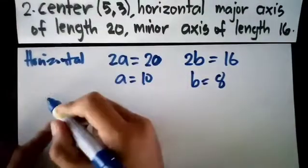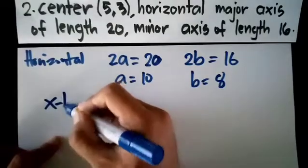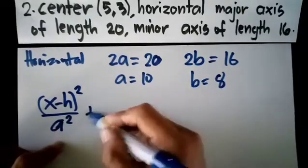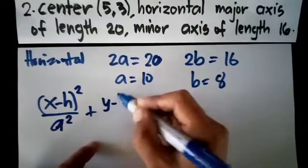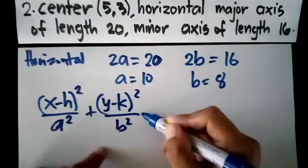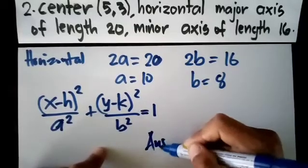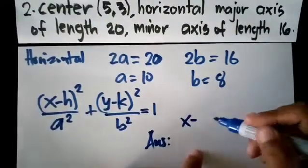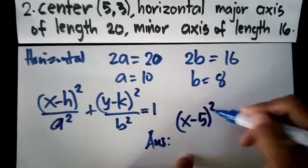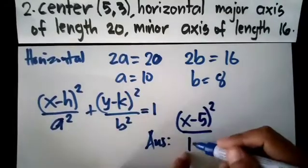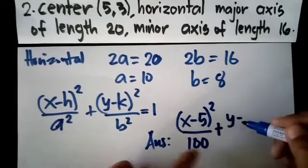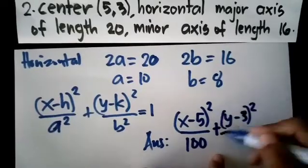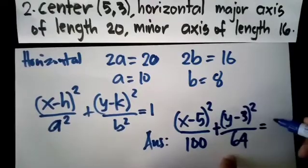Since it's horizontal, the x part has a bigger denominator. (x - h)² over a² - a squared here because it's horizontal. Then (y - k)² over b² equals 1. So your answer: (x - 5)² - from positive becomes negative - squared over a² which is 10² equals 100, plus (y - 3)² over 8² which is 64, equals 1. So that's it.